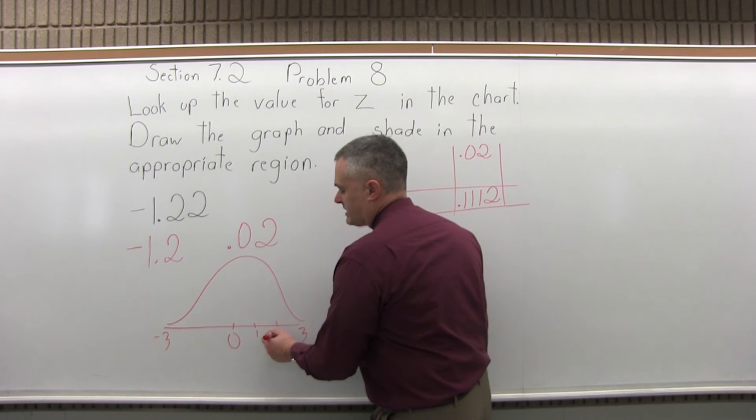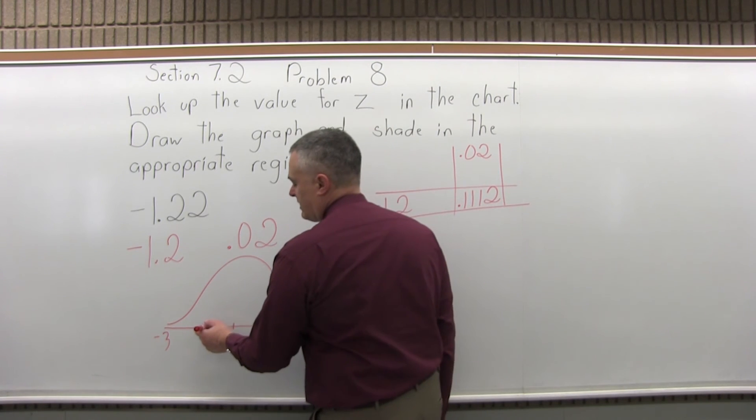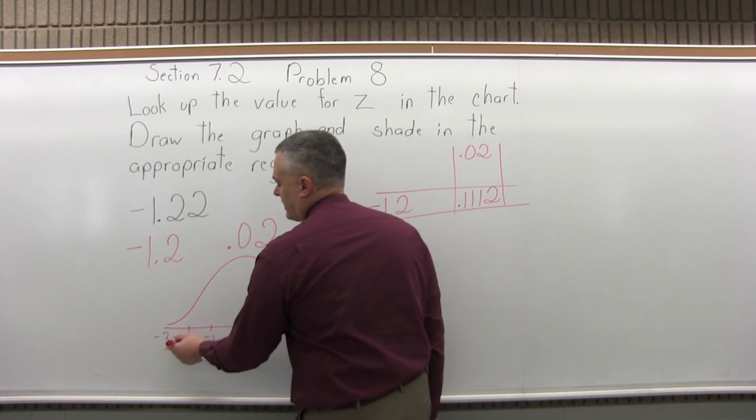Then by eye you can put in positive 1, positive 2, positive 3. And negative 1, negative 2, negative 3.